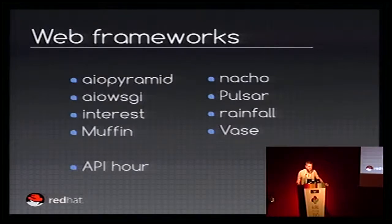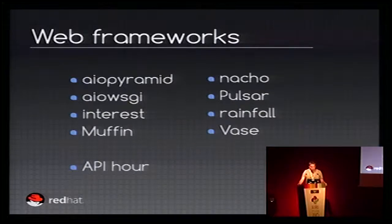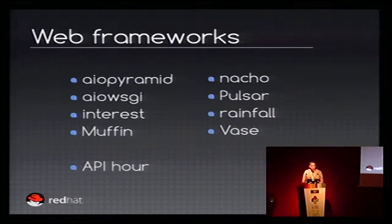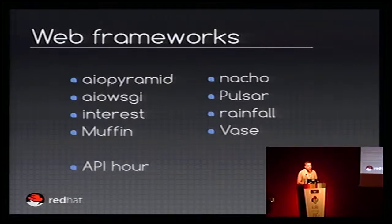For web frameworks, we have a long list, as you may expect, because people want to write their applications differently. You have aio-pyramid, aio-wsgi, InterlRest, Muffin, Naure, Pulsar, Rainfall, and OnBase. And the last one, API-Oware — it's not really a framework, it's more a worker to execute the application on multiple cores. By default when you use AsyncIO, everything runs in a single thread and a single process. It's quite fast, but it can be much faster using multiple processes. API-Oware is based on Gunicorn with a specific worker, so you can use multiple processes and clients are distributed between each process, giving much better performance.